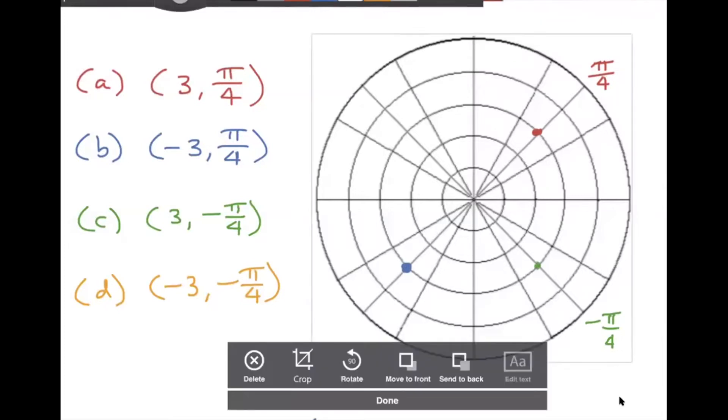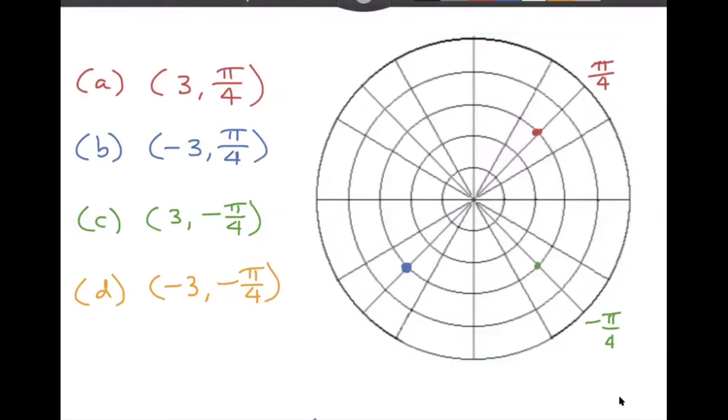And then for letter C, three comma negative pi over four. Of course, you know that negative pi over four is down here. We would travel clockwise from the positive x-axis. And then we have a positive value of R. So that works the normal way. Just go three units along that angle.